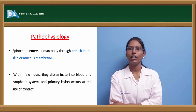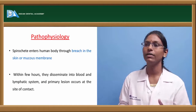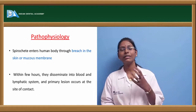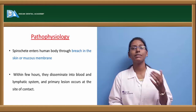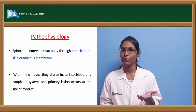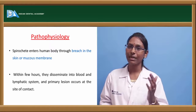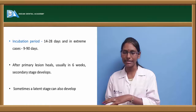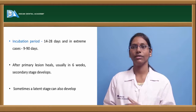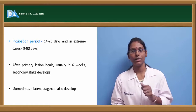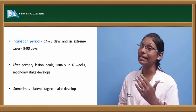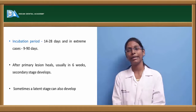Regarding pathophysiology, the spirochetes usually enter the human body through any breach or break in the mucosa or epithelium of the skin. Within a few hours, these organisms disseminate through the bloodstream and lymphatics, and the primary lesion is seen at the site of contact. The incubation period is usually 14 to 28 days, and in extreme cases can range from 9 to 90 days.